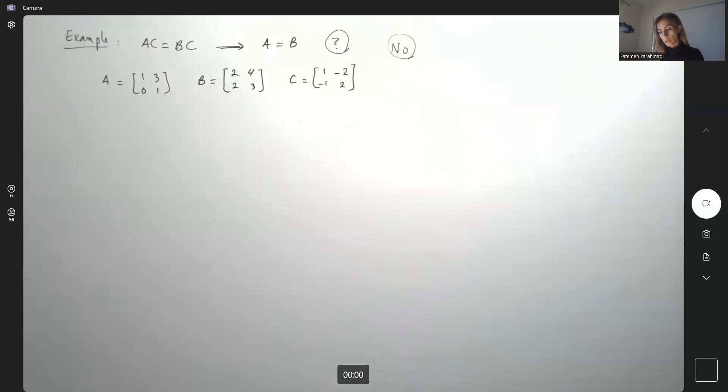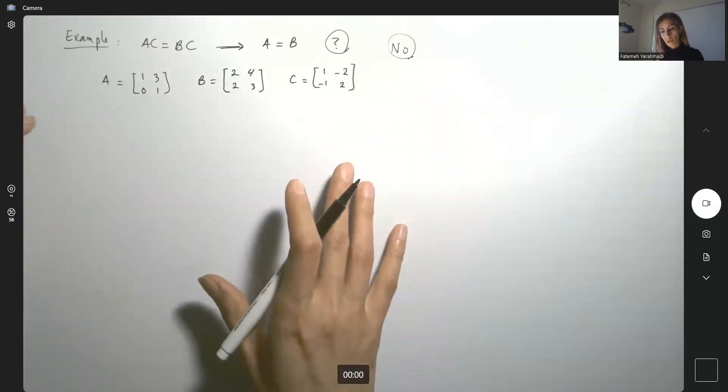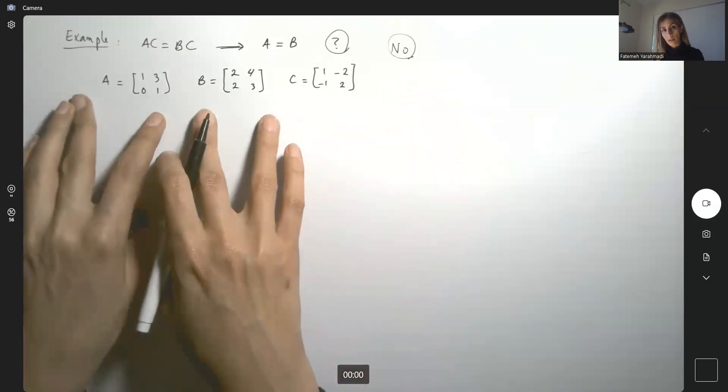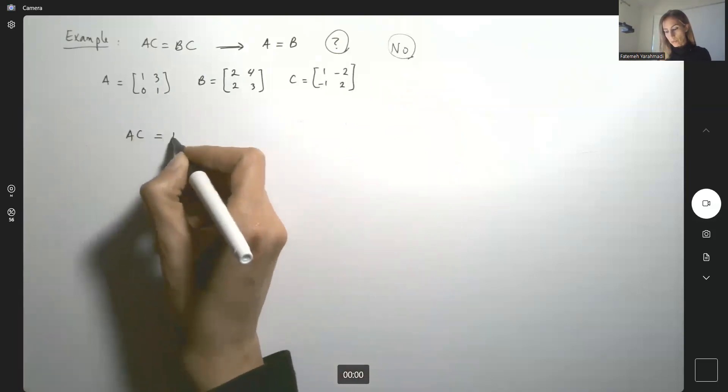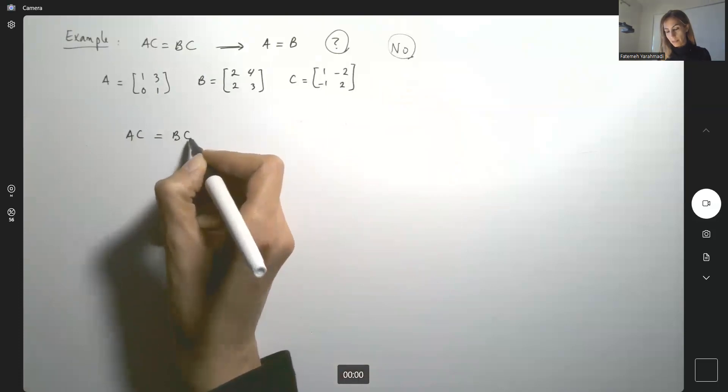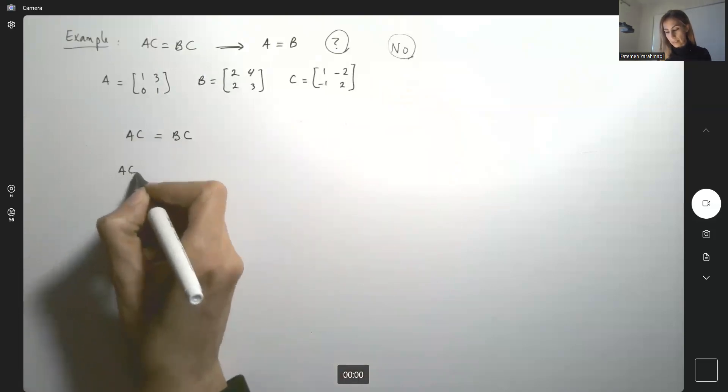So here you have different matrices, am I right? So obviously A and B are not equal to each other. I'm going to show you that AC is equal to BC.